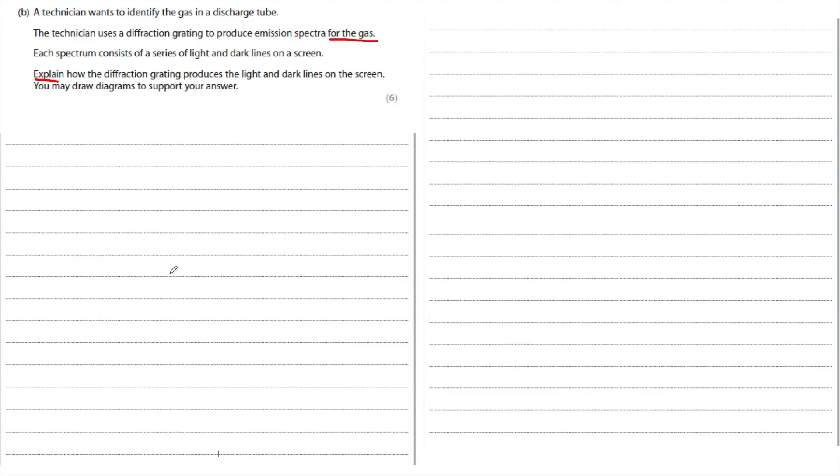The first key thing with diffraction gratings is make sure that you have at some point written these two key ideas. The first is that bright lines are produced when light from neighbouring slits arrives in phase because the path difference is one whole wavelength, so they constructively interfere. And the dark lines are produced where the light from adjacent or neighbouring slits arrives out of phase by half a wavelength, and so destructively interferes.